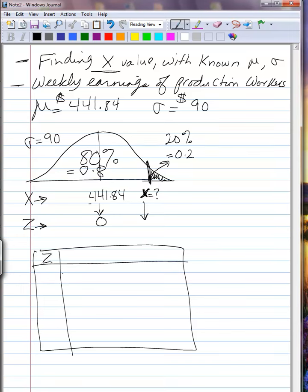We see within the areas that are given within the entries of the table, that there is a number for 0.7995, and there's a number for 0.8023.